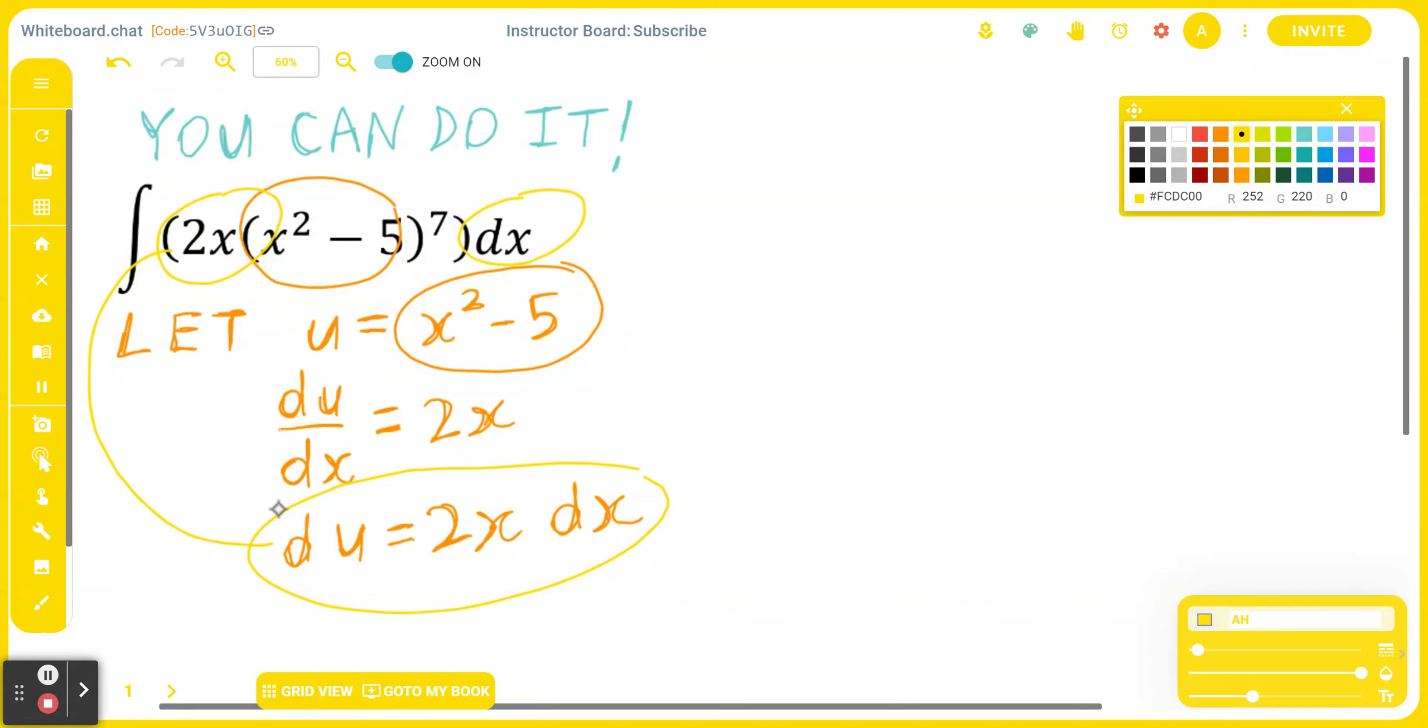This is basically going to be du. So what this implies is you can go back to the beginning. We write the entire given as the integration of, instead of writing 2x dx, it's going to be du. And instead of writing x squared minus 5 to the power of 7, it's going to be u to the power of 7.